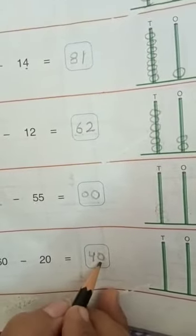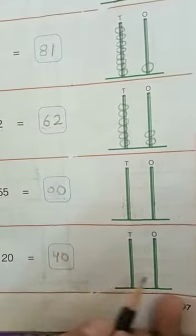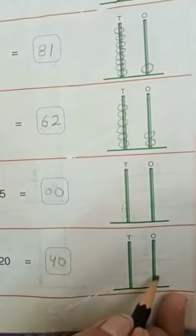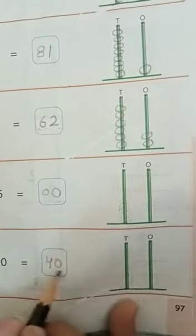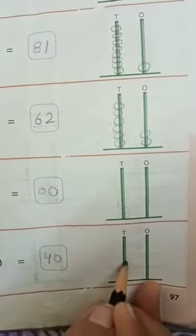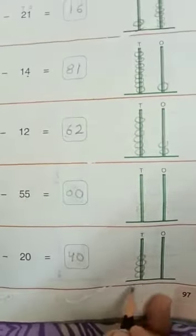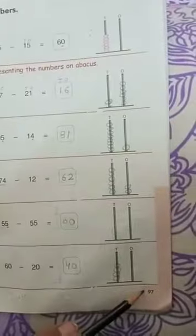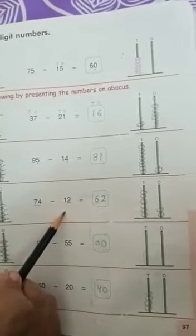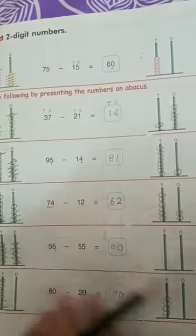Now we will show this number on this abacus. 0 ones — we will not draw any bead here. Now 4 tens: 1, 2, 3, 4. The answer is 40. Now you will do page 97 in your book and revise the same page in your rough notebook also. Thank you.